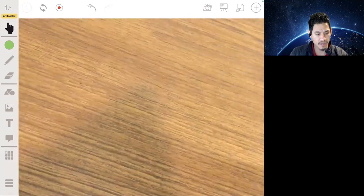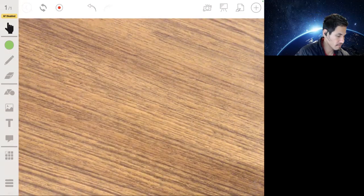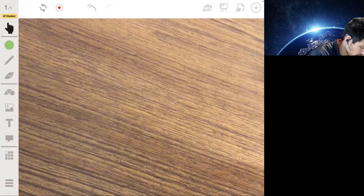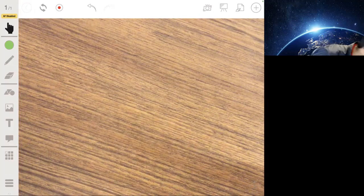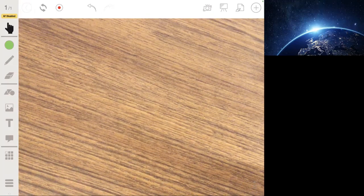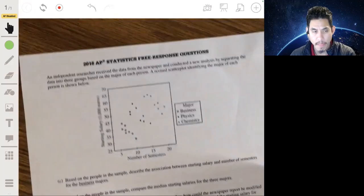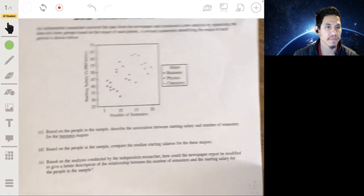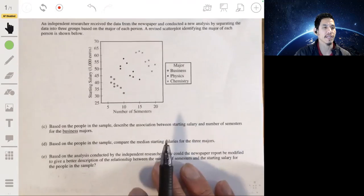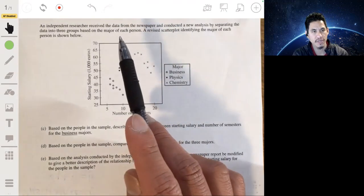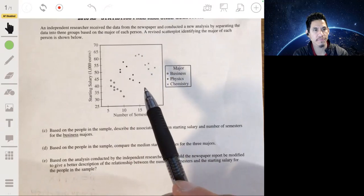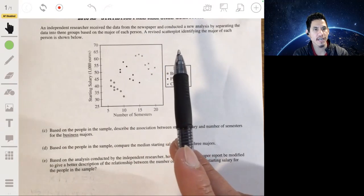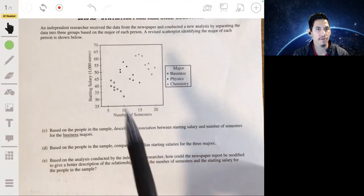All right, now let's look at the back. We got going on in the back. Oh, that's papers. My pictures are fumbling over here. All right. So here we got an independent researcher that received data from the newspaper and conducted a new analysis by separating the data into three groups based on the major. So this data is based on the major of the person, of each person. A revised scatterplot identifying the major of each person is shown here.